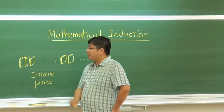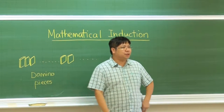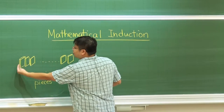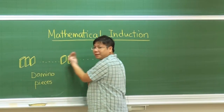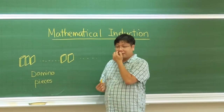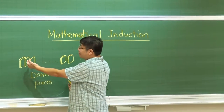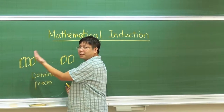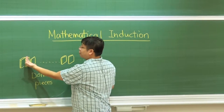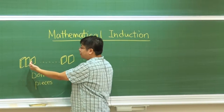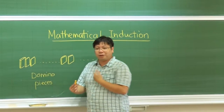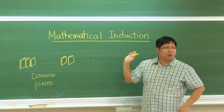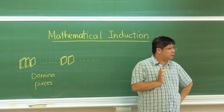Domino pieces can also be used to play games. You arrange the domino pieces so that you flip the first one. The first one will make the second one flip, and the second one will push the third one, and so on and so forth, so that all the pieces on the right-hand side will be pushed.